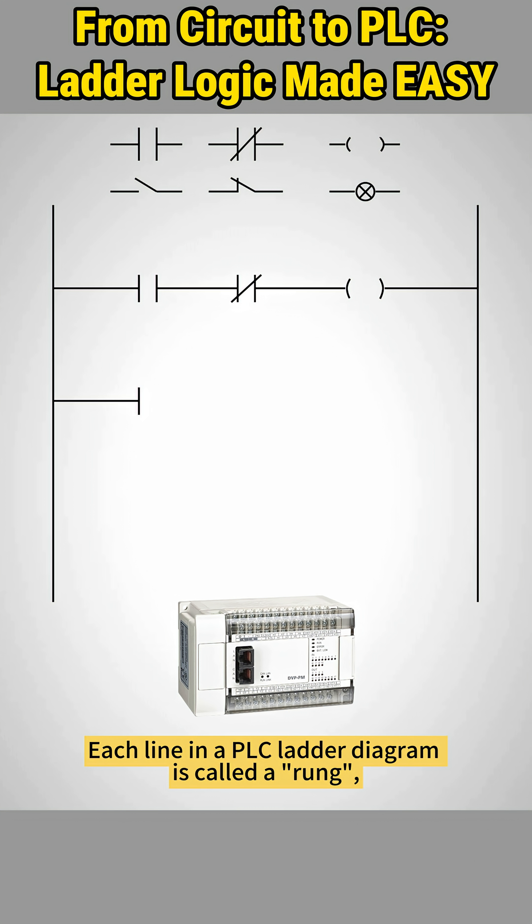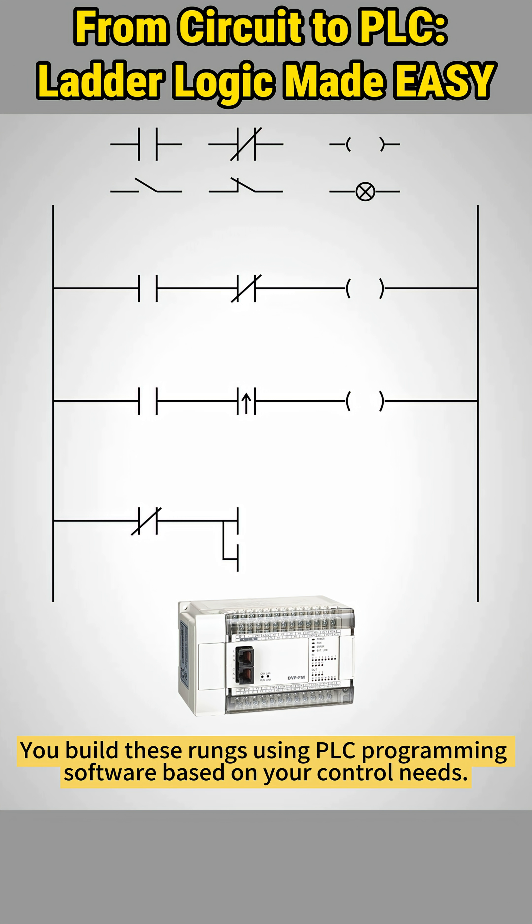Each line in a PLC ladder diagram is called a rung, just like a step in a ladder. Each rung represents a layer of logic for a specific control function. You build these rungs using PLC programming software based on your control needs.